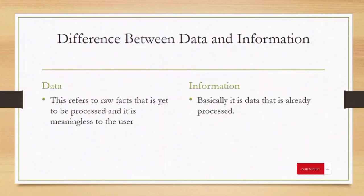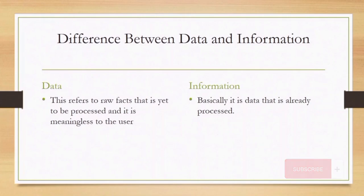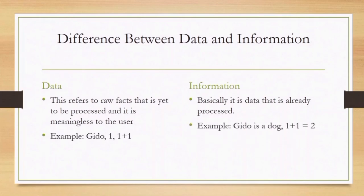What is the difference between data and information? Data refers to the raw facts that are to be processed and are meaningless to the user. For example, 'Guido' or '1 + 1' does not have any meaning. Information refers to data that has already been processed. For example, 'Guido is a dog' — you now have some information about Guido. And '1 + 1 = 2' — you know where the two has come from. That is information.